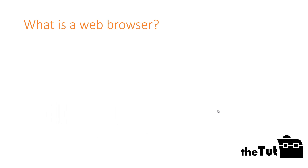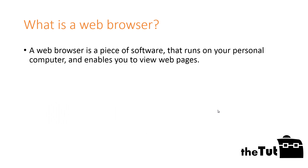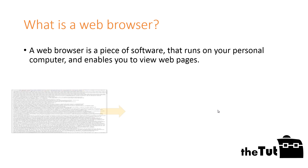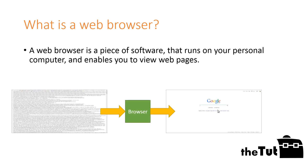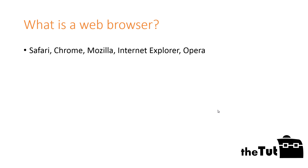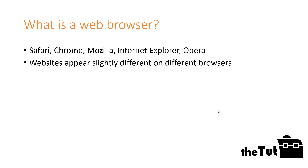What is a web browser? A web browser is a piece of software that runs on your personal computer and enables you to view web pages. Browsers interpret the HTML code and provide a visual layout displayed on the screen. Apple Safari, Google Chrome, Mozilla Firefox, Opera, and Internet Explorer are some examples of browsers. Browsers are updated regularly, changing to address new aspects of HTML or emerging technologies.